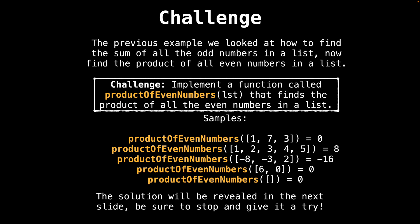Alright, so we just finished looking at how to take the sum of all the odd numbers in a list. Now I have a challenge for you: implement a function called product_of_even_numbers that finds the product of all the even numbers in a list. You should be able to reuse the sum_odds function as a good starting point. I've outlined several examples below showing the expected output. Be sure to pause this video and give it a try — I'm going to reveal the solution in the next slide.